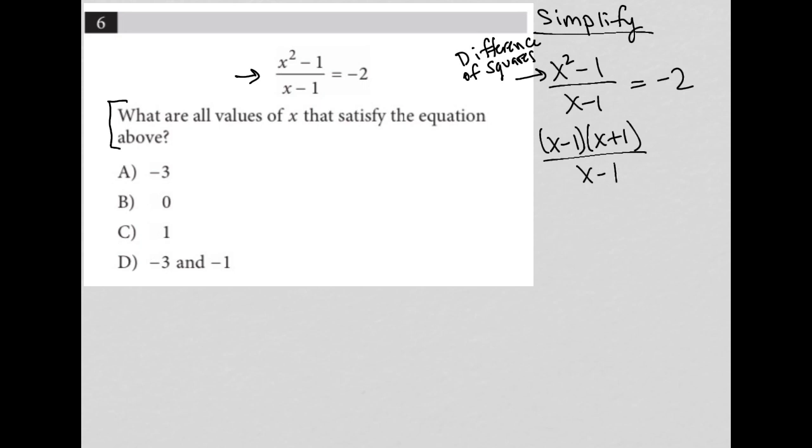Again, we have x minus 1 in the denominator. This equals negative 2. The x minus 1s will then cross out. So I'm left with x plus 1 equals negative 2.